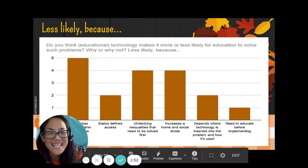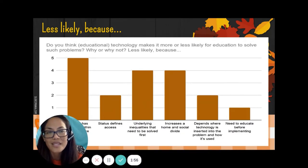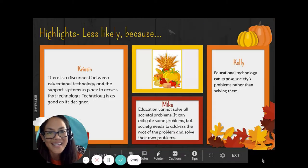As for those who chose less likely, common themes included educational technology has problems within itself to solve. Underlying educational technology inequalities need to be solved first before solving societal ills, and educational technology increases home and societal divide. Here are highlights from those who chose less likely.